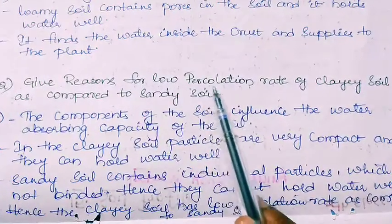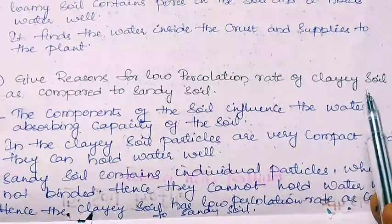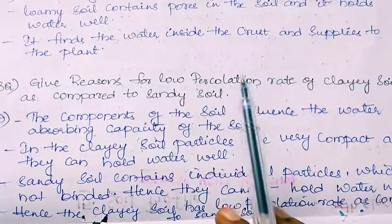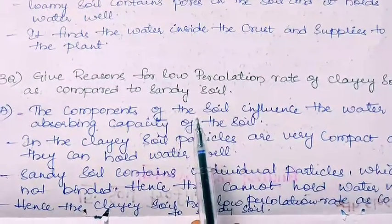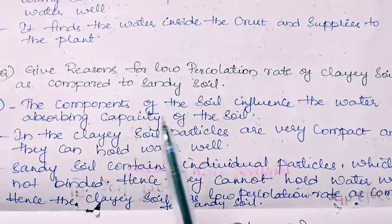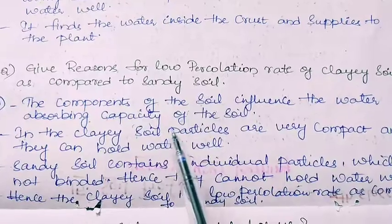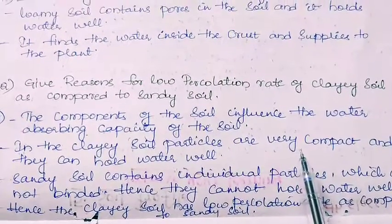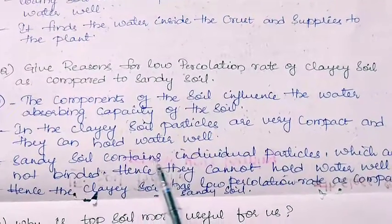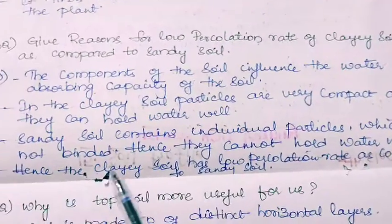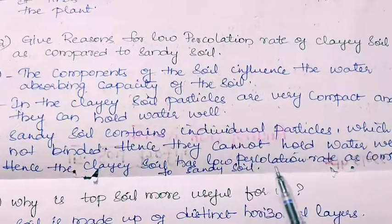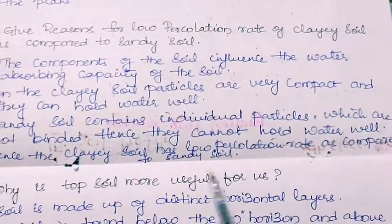Third question: Give reasons for the low percolation rate of clay soil as compared to sandy soil. Percolation refers to water holding capacity. The components of the soil influence the water absorbing capacity. In clayey soil, particles are very compact and they can hold water well. Sandy soil contains individual particles which are not bound together, hence they cannot hold water well. Therefore, clayey soil has a low percolation rate compared to sandy soil.